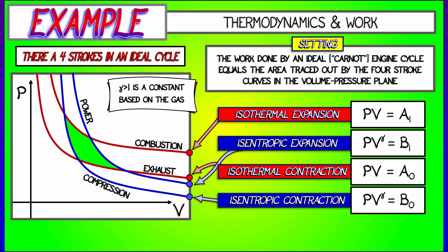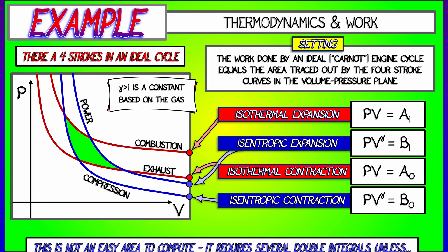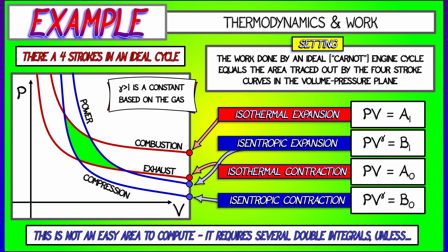And here's the fact from thermodynamics. The area of that unusual looking shape is something you want to know about. It's the amount of work that is done over a single cycle in your idealized or Carnot engine. So, okay, so we want to compute that area, but it's not so easy to compute. You might be able to do it using single variable calculus, but it's kind of a pain.